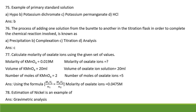Examples of primary standard solutions include potassium dichromate. Hypo, potassium permanganate, and HCl are secondary standard solutions — potassium dichromate is the primary standard solution. The process of adding one solution from the burette to another in the titration flask in order to complete the chemical reaction is known as titration.